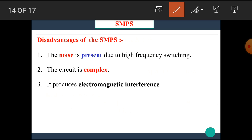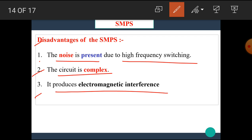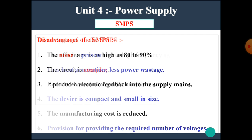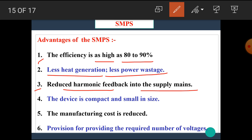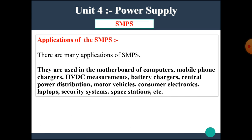Now let's see some disadvantages of the SMPS. First, noise is present due to high frequency switching. The circuit is complex and it produces electromagnetic interference. Coming to the advantages of SMPS: the efficiency is high at 80 to 90%, less heat generation meaning less power wastage, reduction of harmonic feedback into the supply mains, the device is compact and small in size, the manufacturing cost is reduced, and it provides the required number of voltages.